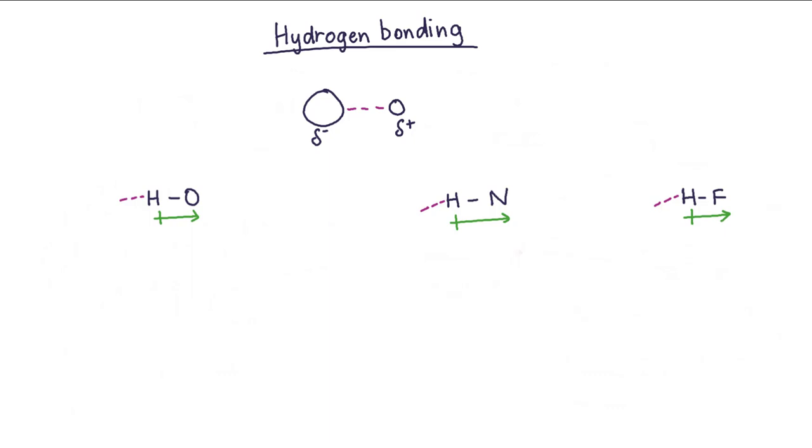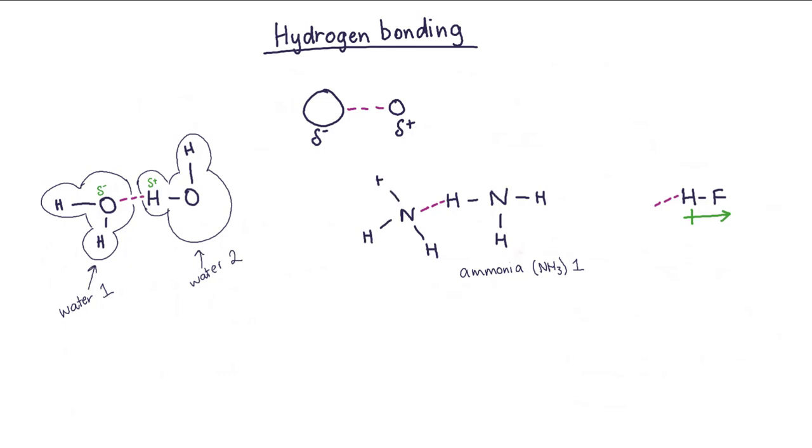For example in water, hydrogen bonding occurs between the hydrogen of one molecule and the oxygen of another. In ammonia, hydrogen bonding occurs between the hydrogen of one molecule and the nitrogen of another. Note that it's important for the oxygen, nitrogen or fluorine to have a lone pair of electrons.